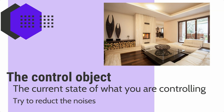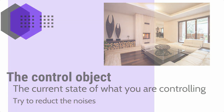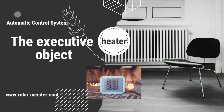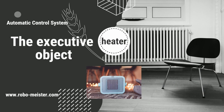The last element of the system is the executive object — for example, a heating device — which can be adjusted depending on the signal received from the regulator. However, the executive object introduces changes to the conditions that prevail in the regulated object, which means they must be constantly measured.